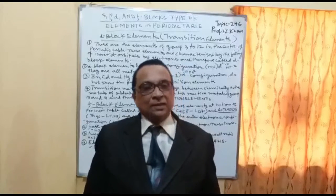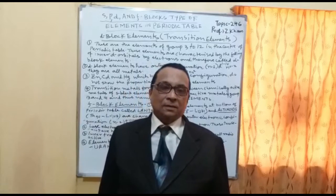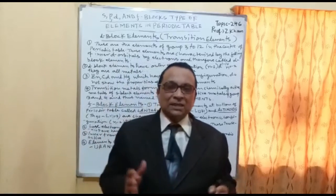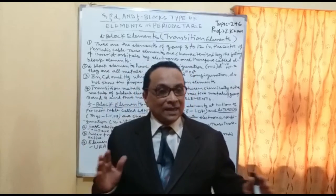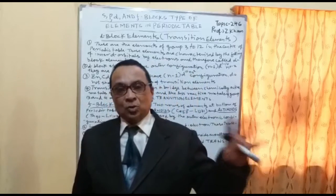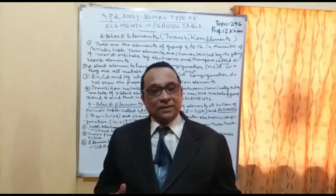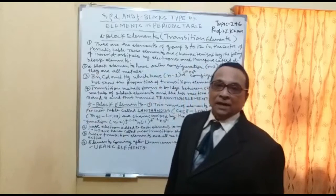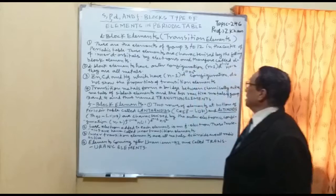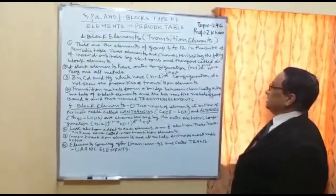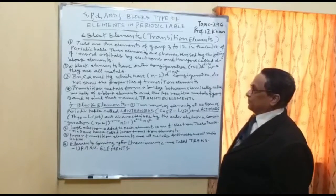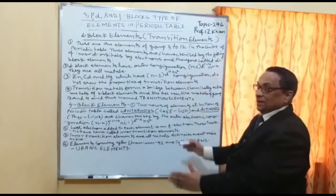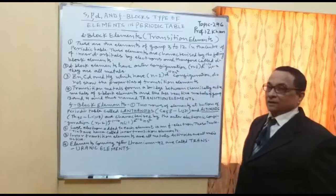Next are the D block elements, commonly known as transition elements. They are called transition elements because they lie between the highly electropositive groups 1 and 2 and the electronegative group 17. They are all metallic but are not as electropositive or electronegative as those extremes. D block elements are the elements of groups 3 to 12 in the center of the periodic table, occupying the central space between the main groups.